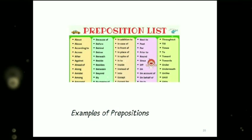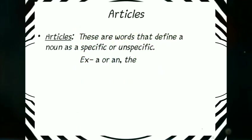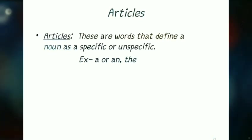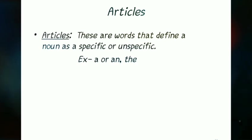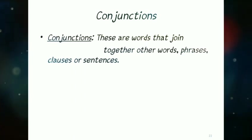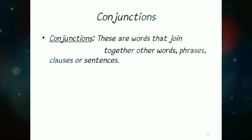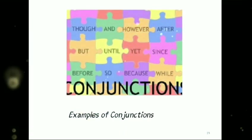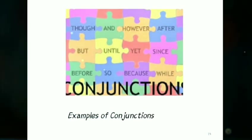Articles are words that define a noun as specific or unspecific. Examples: a, an, and the. Conjunctions are words that join together other words, phrases, clauses, or sentences. Examples of conjunctions: though, and, however, after, but, until, yet, since, before, so, because, while.